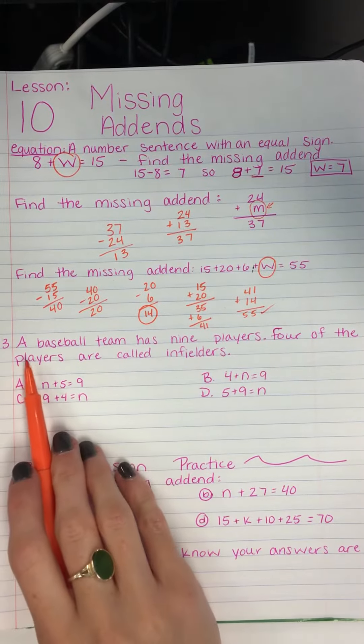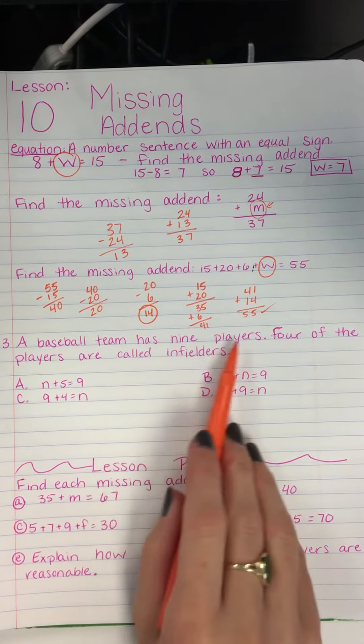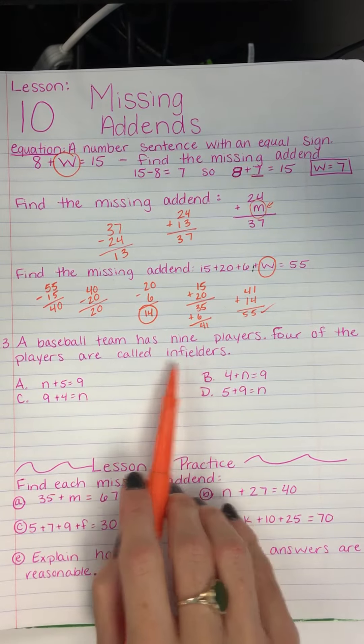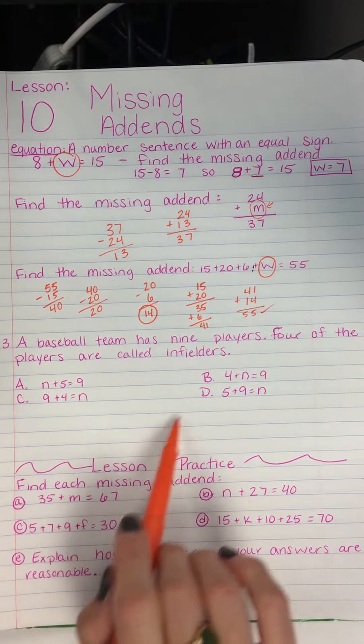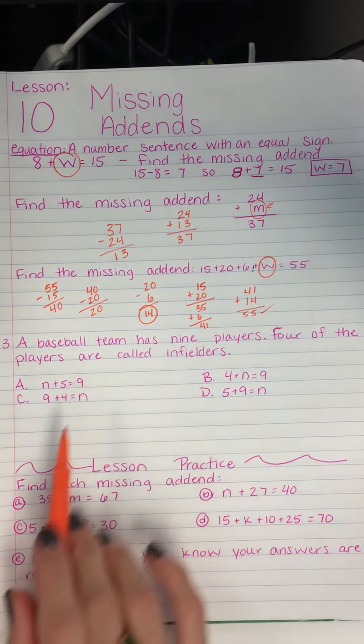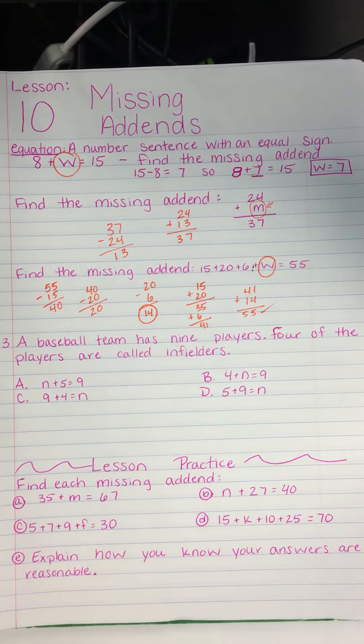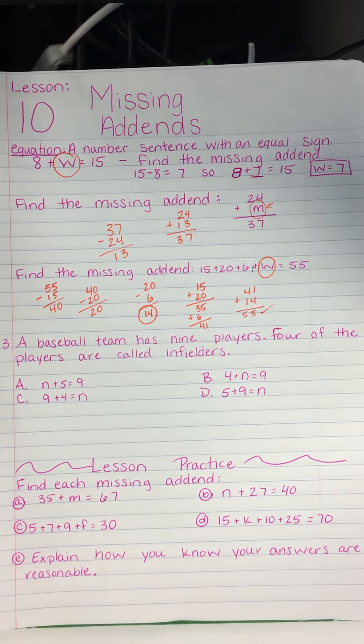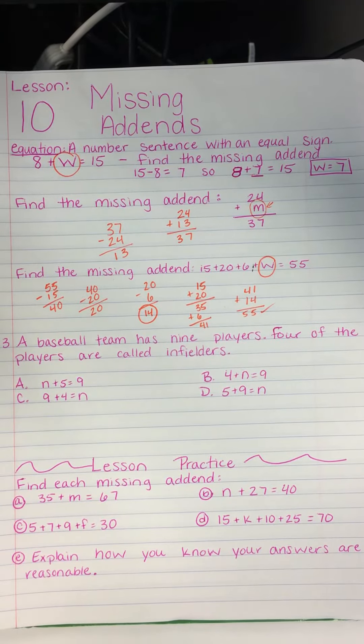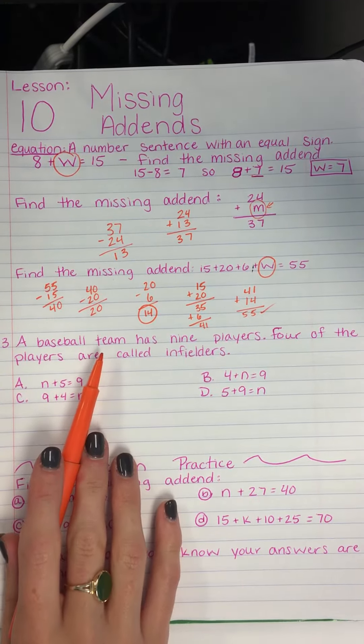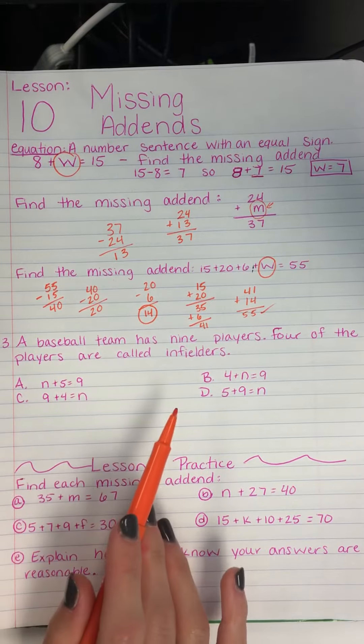Alright, example 3. A baseball team has 9 players. 4 of the players are called infielders. So we've got some problems to look at from here. So we have A, N plus 5 equals 9. Oh, we're supposed to figure out, I'm so sorry. We're supposed to figure out which equation can be used to find the number of players on a team who are not infielders.